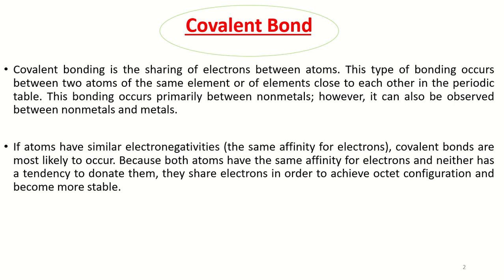The ionic bond was formed due to the huge difference of electronegativities. For example, the ionic bond forms between the highly electropositive element and the highly electronegative element of the periodic table. The highly electropositive elements belong to group IA and IIA, while the highly electronegative elements include fluorine, chlorine, oxygen, nitrogen, etc.